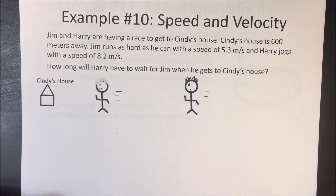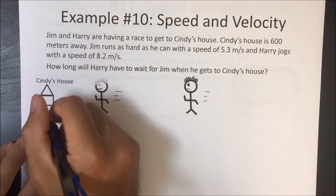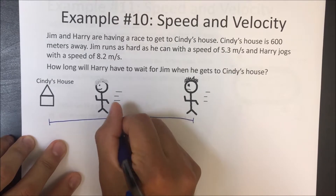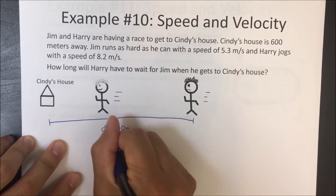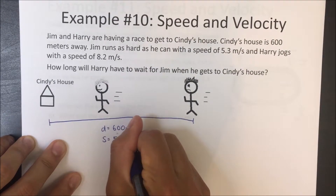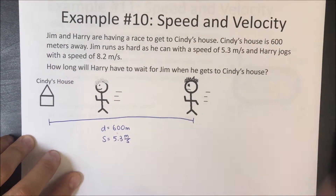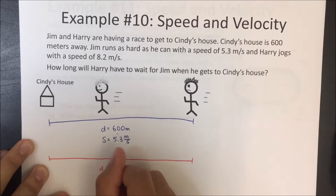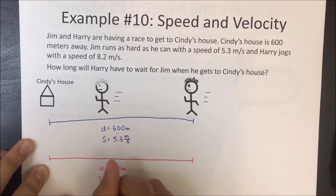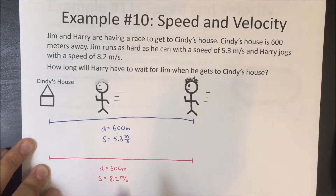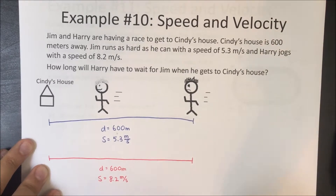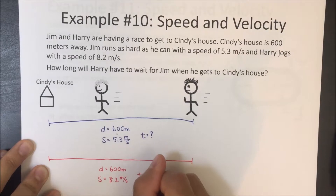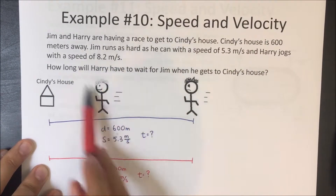We're going to look at two different scenarios. Jim (in blue) is going a distance of 600 meters at a speed of 5.3 meters per second. Harry (in red) is also going 600 meters but at a speed of 8.2 meters per second. Obviously Harry is going to get there before Jim. We want to find how long it takes each of them, and then subtract to find how long Harry is waiting.